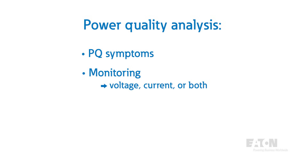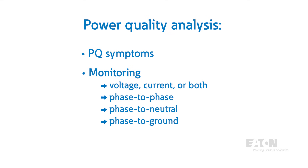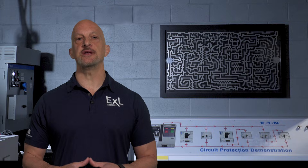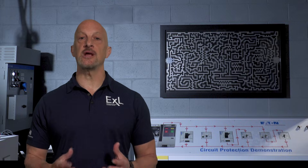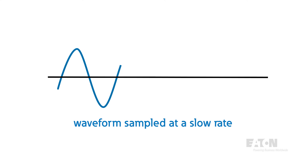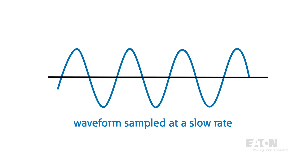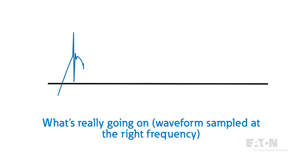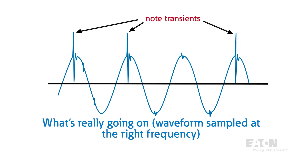Should I monitor voltage, current, or both together? Do I monitor phase-to-phase, or phase-to-neutral, or phase-to-ground? So many questions. The first step in monitoring power quality is really to know and understand your meter and recognize what it's capable of. Once you feel comfortable that the waveform you've captured is legitimate and you haven't missed anything by sampling too slow or too fast, you can start to analyze the information.